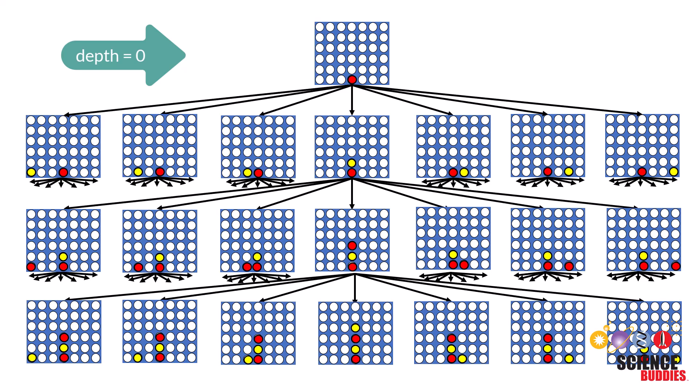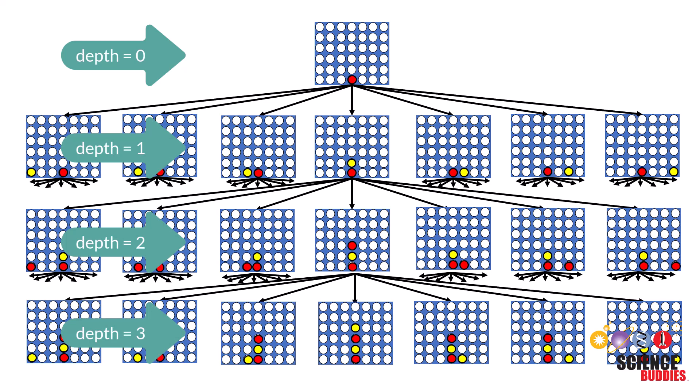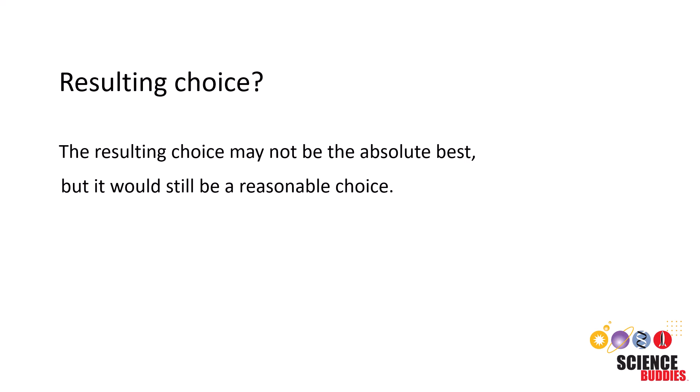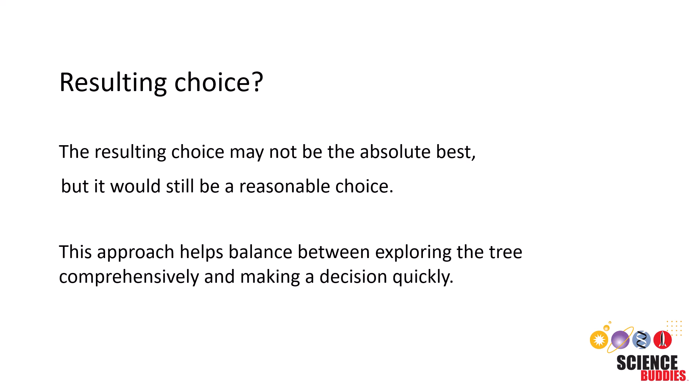Instead of exploring all the way to the end, what if the algorithm only explored a depth of three? The resulting choice may not be the absolute best, but it would still be a reasonable choice. This approach helps balance between exploring the tree comprehensively and making a decision quickly.